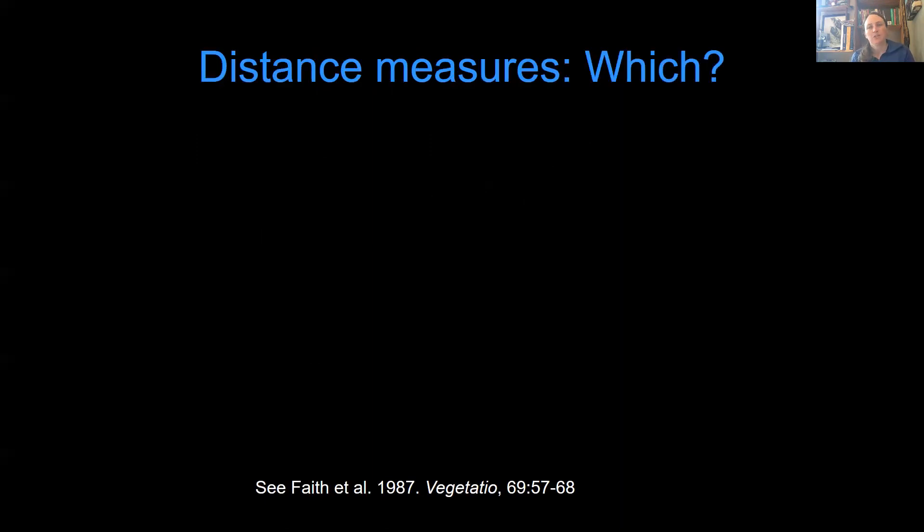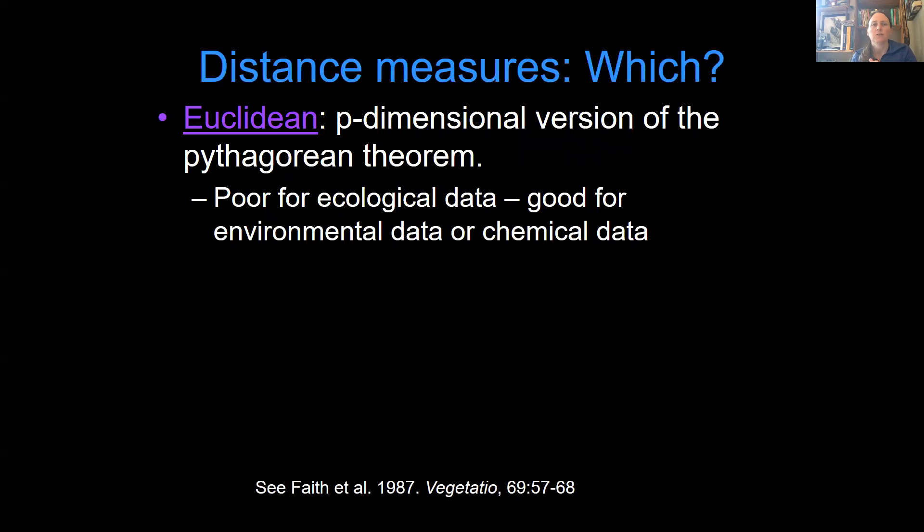So these distance measures, I'm just going to talk about two of them, but there are a whole bunch of distance measures you might decide to use in different circumstances. The first one is called a Euclidean distance. And it's basically just a k-dimensional version of the Pythagorean theorem, meaning that Pythagorean theorem works in two dimensions to be the hypotenuse, the distance between two points. But in p dimensions, that becomes a little bit more complicated. So it turns out that these Euclidean distances work really well for environmental data or chemical data or genetic data, but they don't work so great for ecological data.